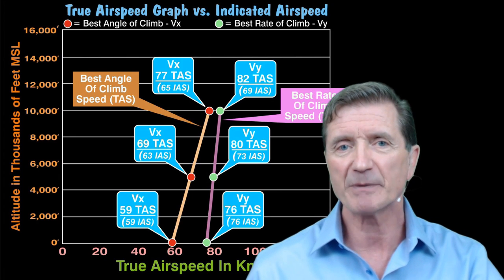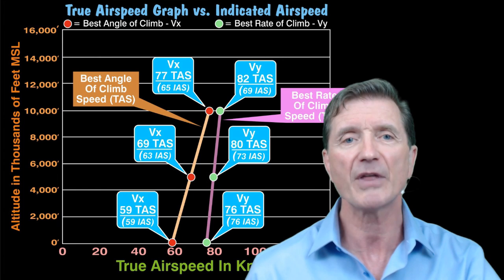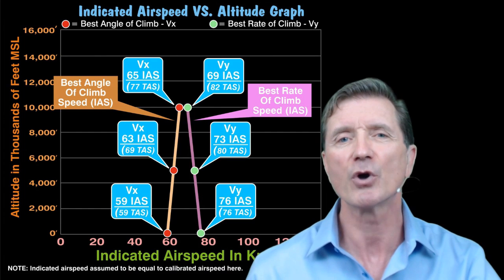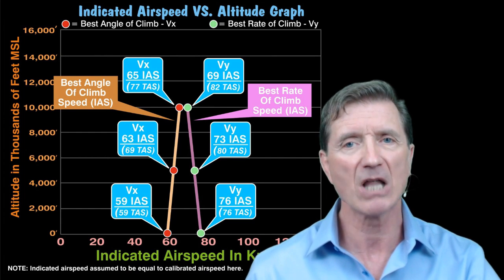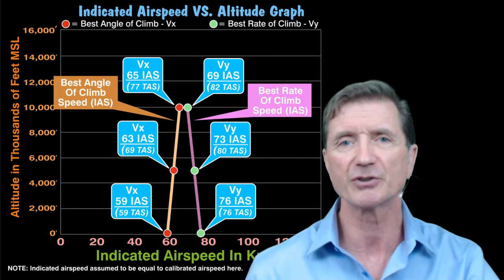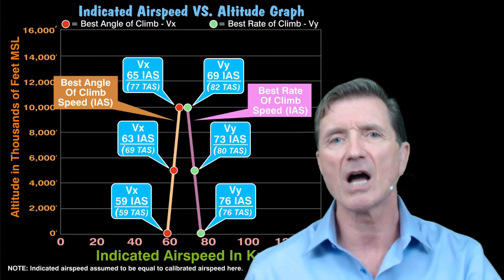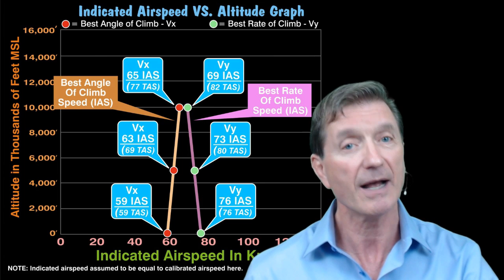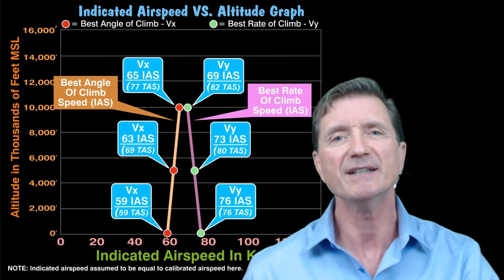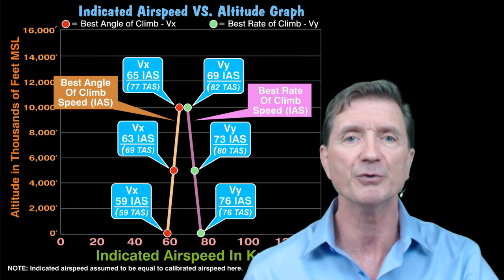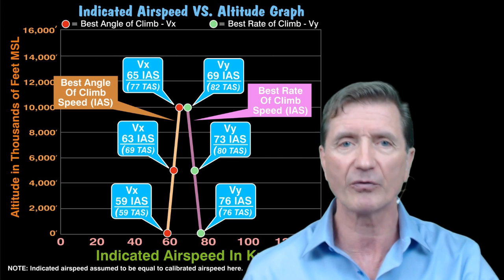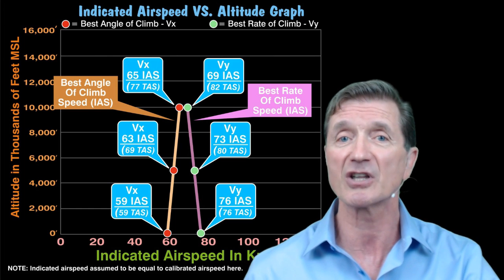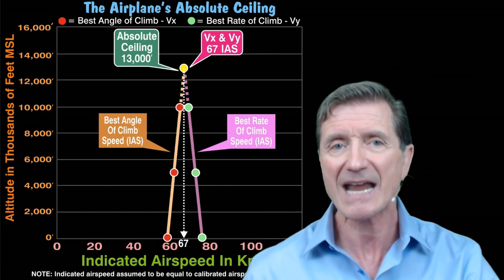Let's take our indicated airspeed values for VX and VY and plot how they change with altitude. Here's the graph that you're probably more familiar with. Why does the best rate of climb line — the VY line — tilt to the left? While VY, the best rate of climb speed, increases with altitude as a true airspeed, it just doesn't increase that quickly. Therefore, the indicated airspeed value needed to produce any given true airspeed value decreases at a slower rate for VY than VX as altitude increases. That's why the best rate of climb line tilts to the left and converges with the best angle of climb speed line.